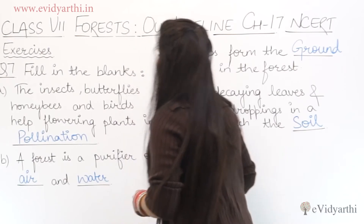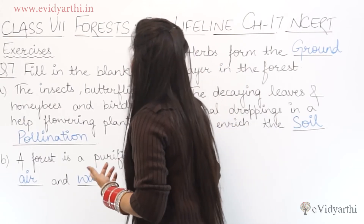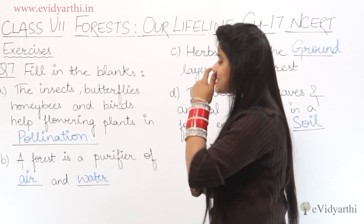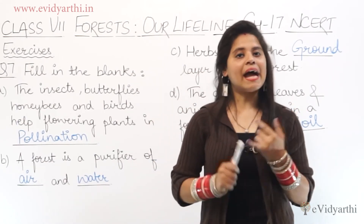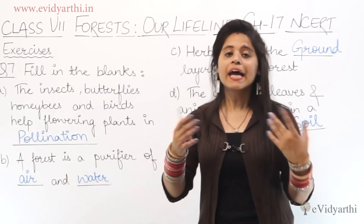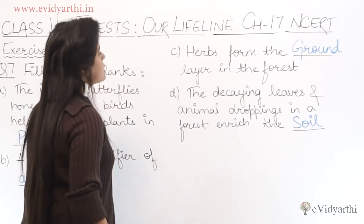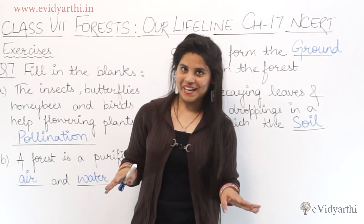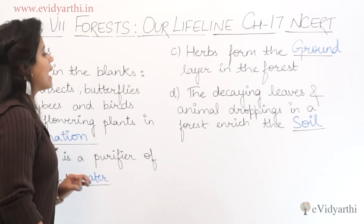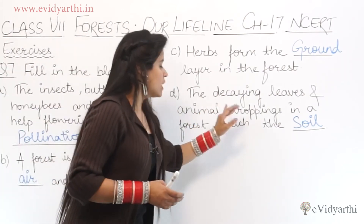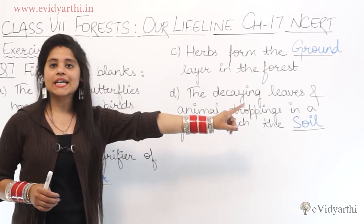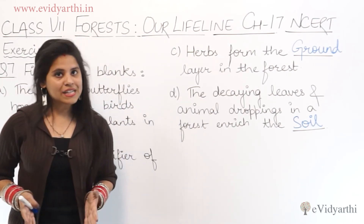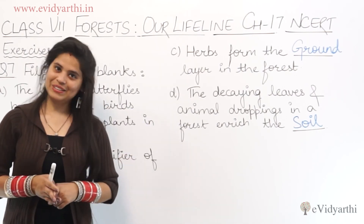Question number 7 is fill in the blanks. The first one is: insects, butterflies, honey bees, and birds help flowering plants in — pollination. The first one is: a forest is a purifier of — air and water. Next, herbs form the blank layer in the forest. Decaying leaves and animal droppings in a forest enrich the soil.